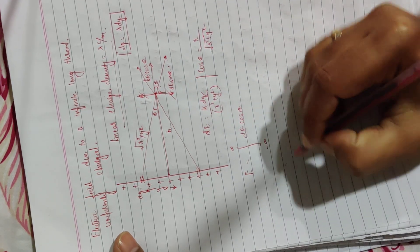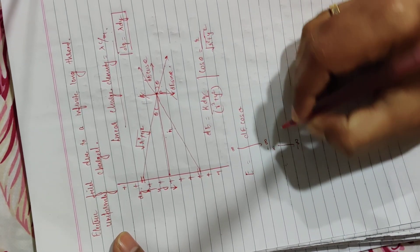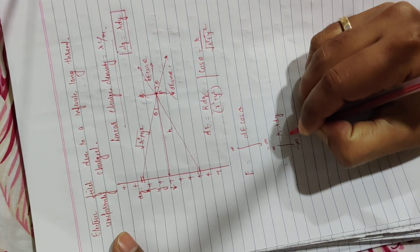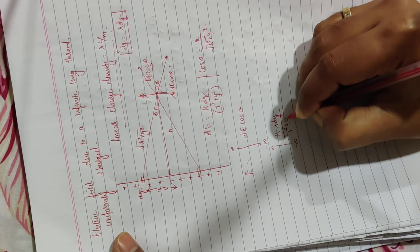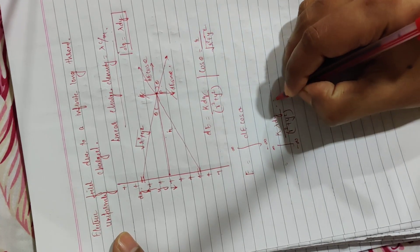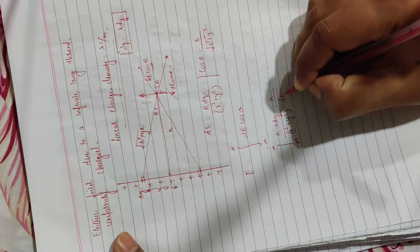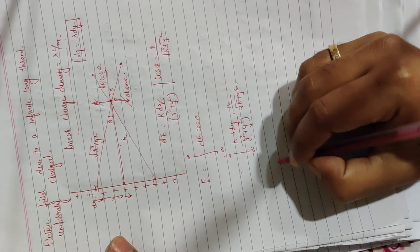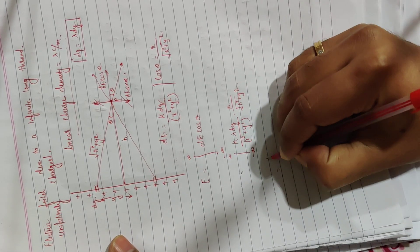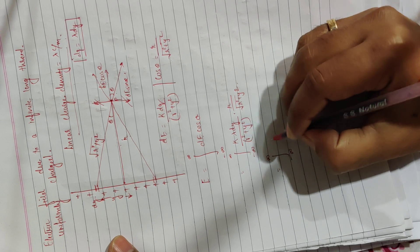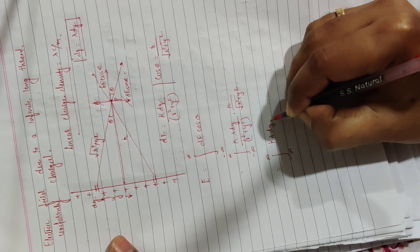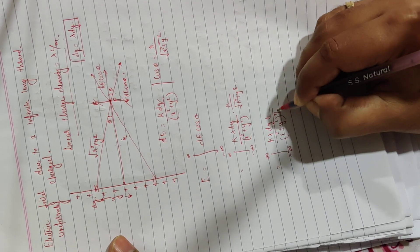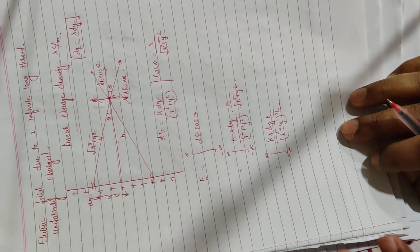If I substitute all this, I get the integral from minus infinity to plus infinity. dE is k·dq, and dq is nothing but λ dy. So dE = k λ dy upon (r² + y²). The total electric field integrates only the dE cosθ component. Substituting cosθ = r / √(r² + y²), the expression becomes k λ r dy upon (r² + y²)^(3/2).